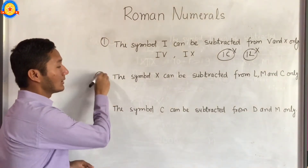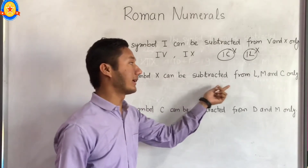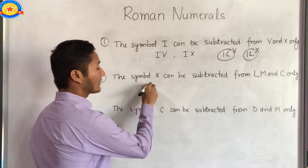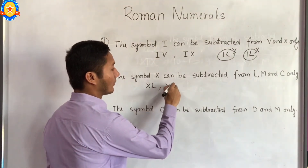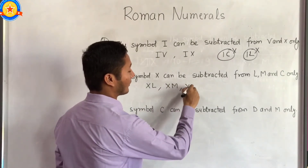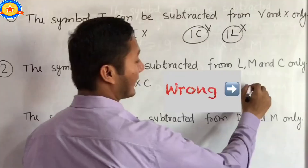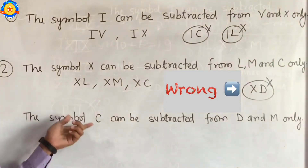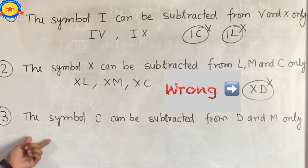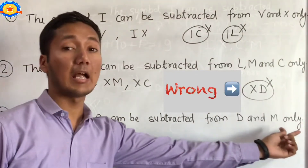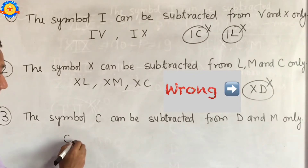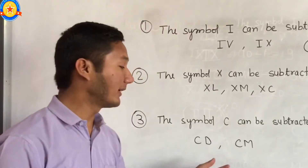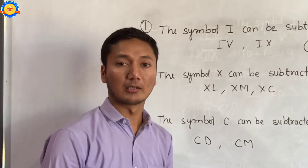Caution number 2: the symbol X can be subtracted from L, M, and C only. We can write XL, XM, and XC, but we cannot write X before D — that would be wrong. Caution number 3: the symbol C can be subtracted from D and M only. We can write CD and CM, but we cannot write C before any other numeral.